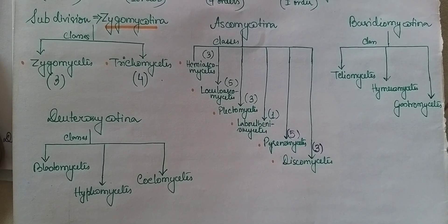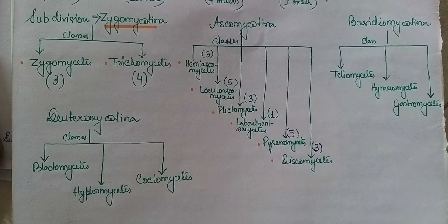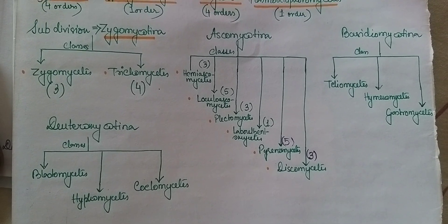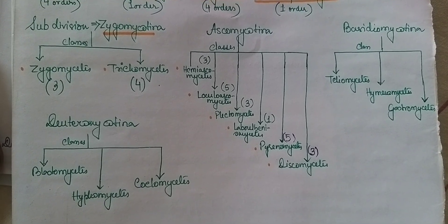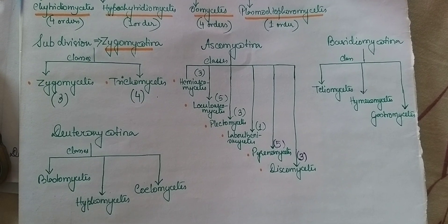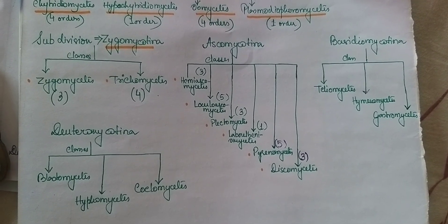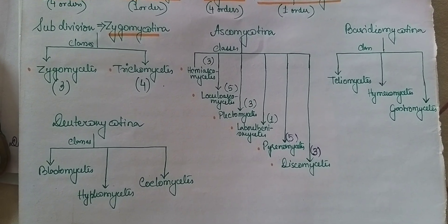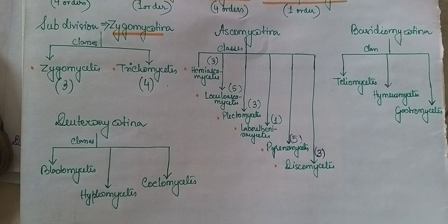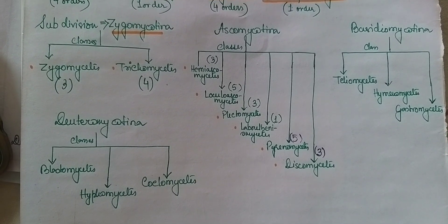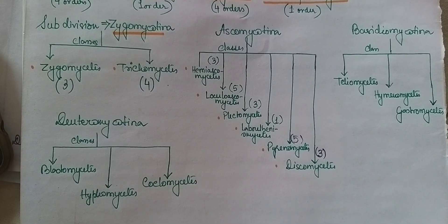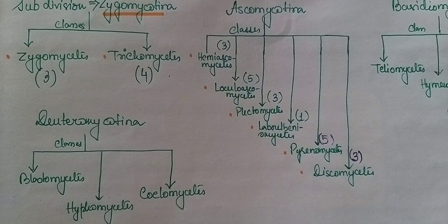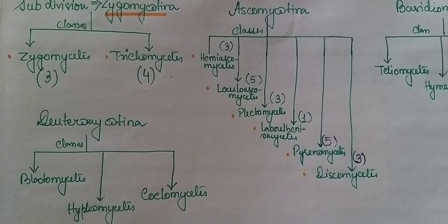Finally, we come to the subdivision Deuteromycotina, which has got three classes: Blastomycetes, Hyphomycetes, and Coelomycetes. This is a brief account of fungal classification according to G.C. Ainsworth.